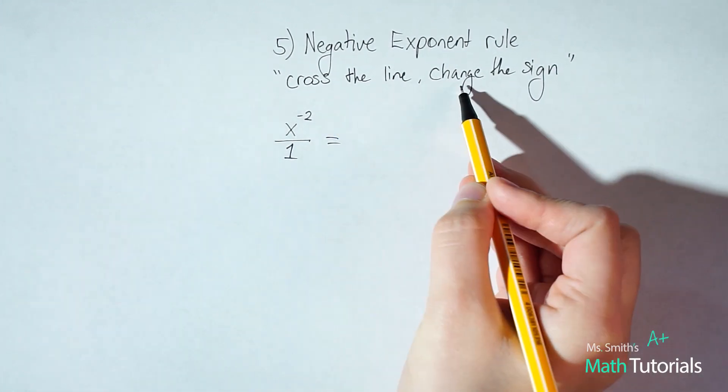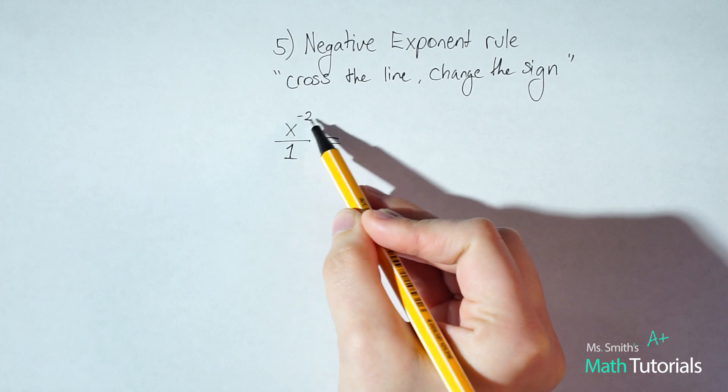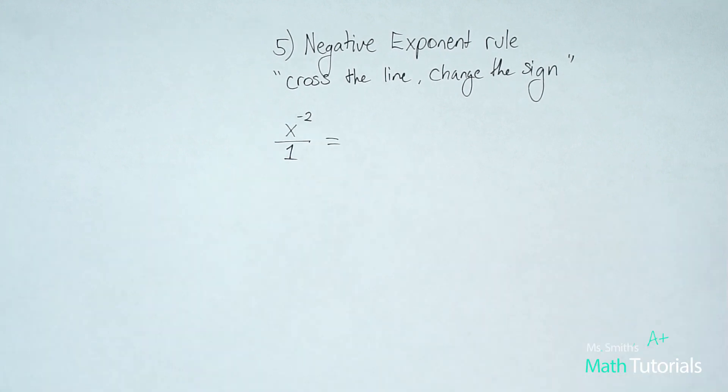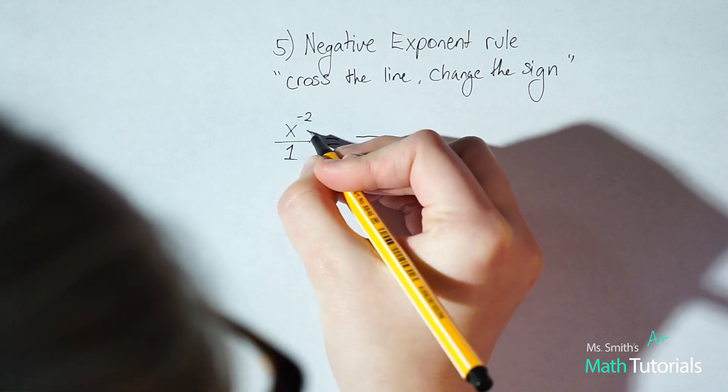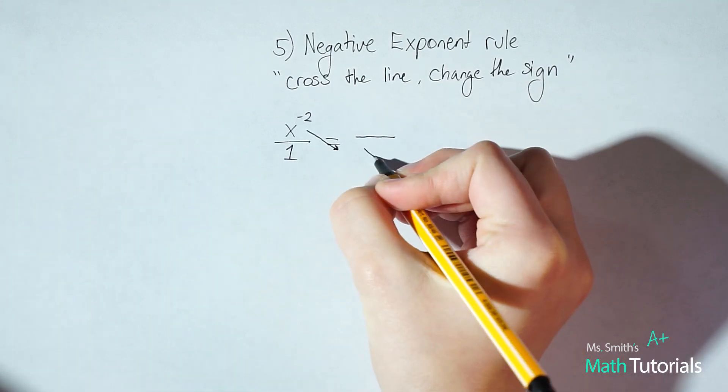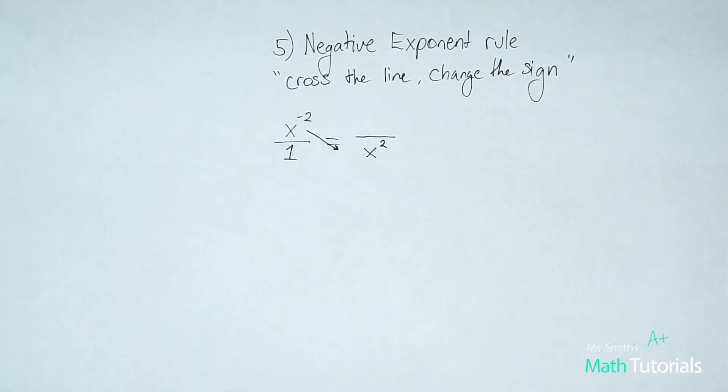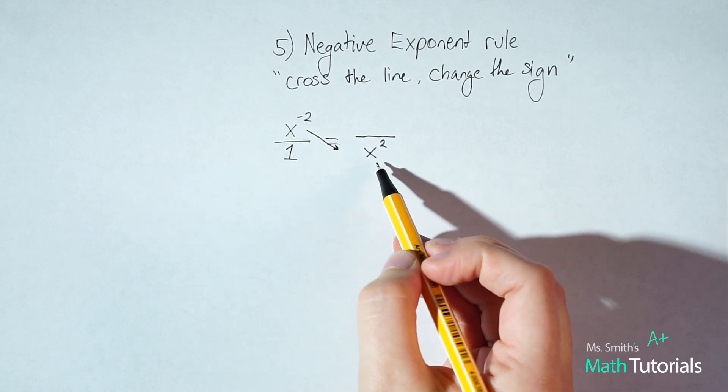So cross the line, change the sign wherever you see a negative exponent. So in this case, this x has a negative two. I want to cross the line, change the sign. So it was up top, now it's going to be in the bottom.